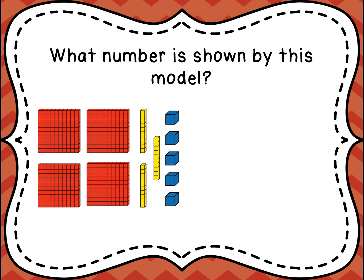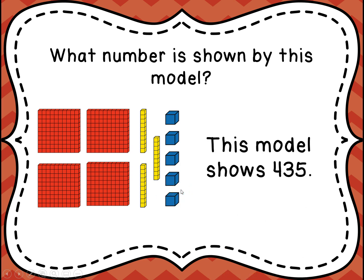What number is shown by this model? Well, if you look, you'll see that there are four of the hundreds, three of the tens, and five of the ones. So this model shows four hundred thirty-five. You have four of the one hundreds — four hundred — three of the tens, so thirty, and five of the ones — four hundred thirty-five.